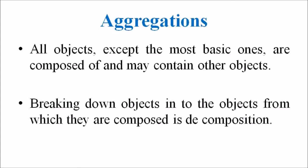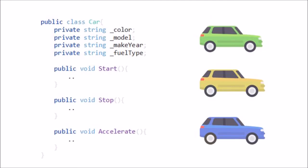Another term to be discussed is aggregation. All objects except the most basic ones are composed of and may contain other objects. Breaking down objects into the objects from which they are composed is called decomposition. This is possible because an object's attributes need not be simple data fields — attributes can reference other objects. Since each object has an identity, one object can refer to another object. This is known as aggregation.